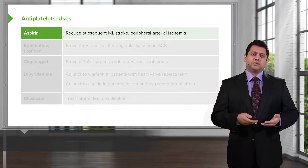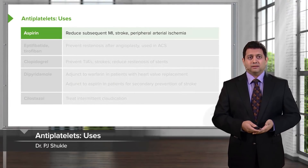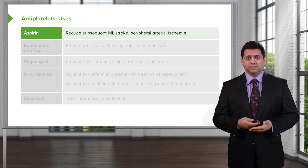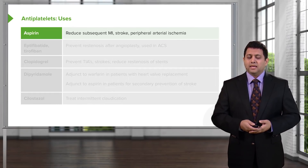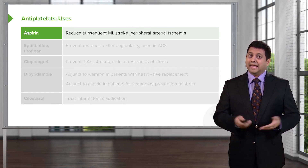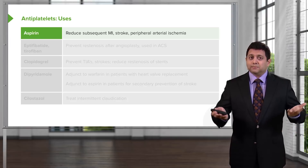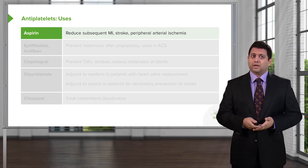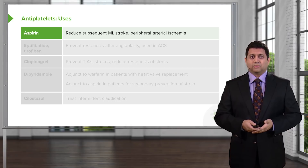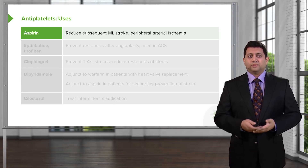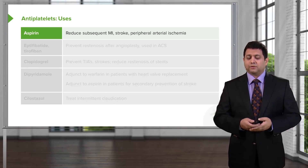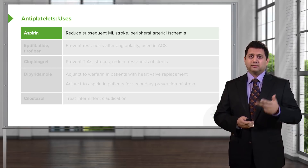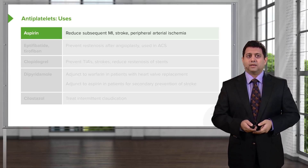In clinical practice, aspirin is the most commonly used antiplatelet we have. It reduces heart attacks — an aspirin a day keeps the cardiologist away. It also reduces stroke, so we use it all the time in preventing stroke activity. And it reduces peripheral arterial ischemia. So the three areas are the heart, the brain, and the legs or peripheral arterial supply.